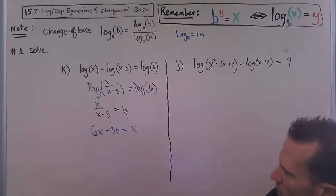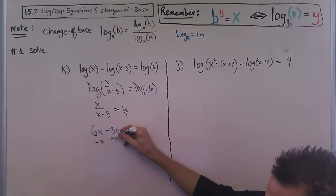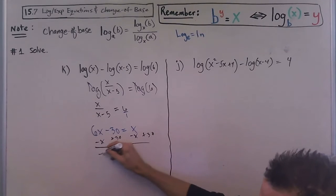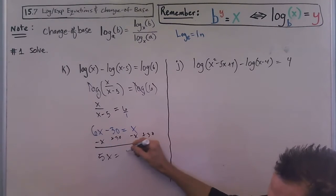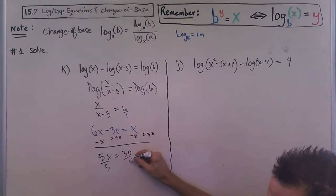I'll subtract x and add 30. What I get is 5x equals 30, and divide by 5, x equals 6.